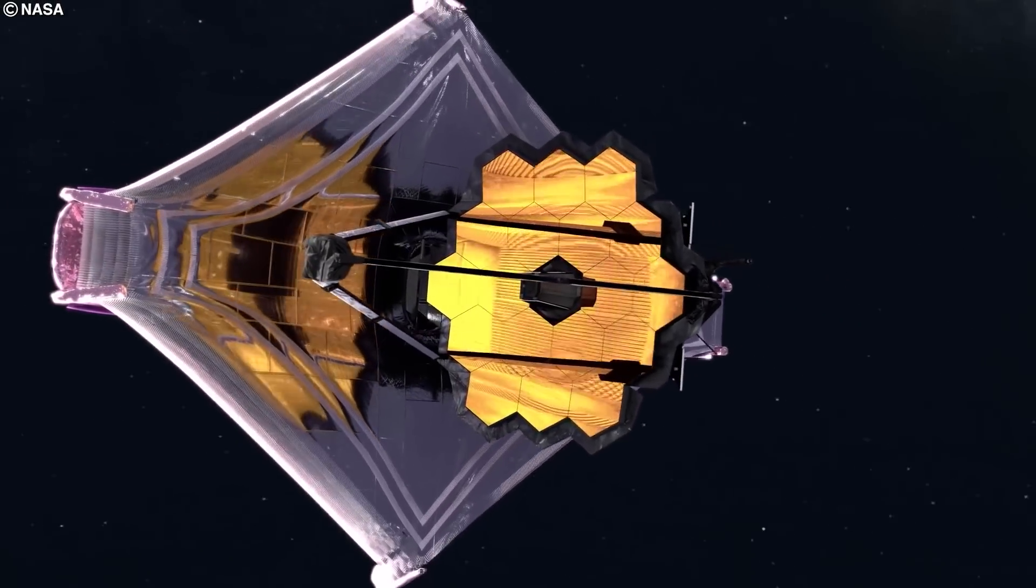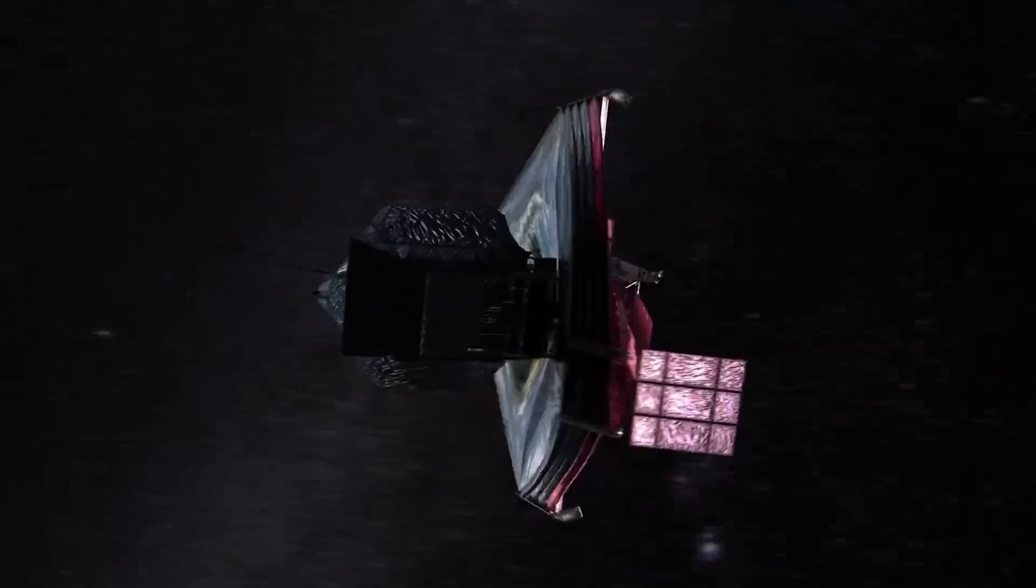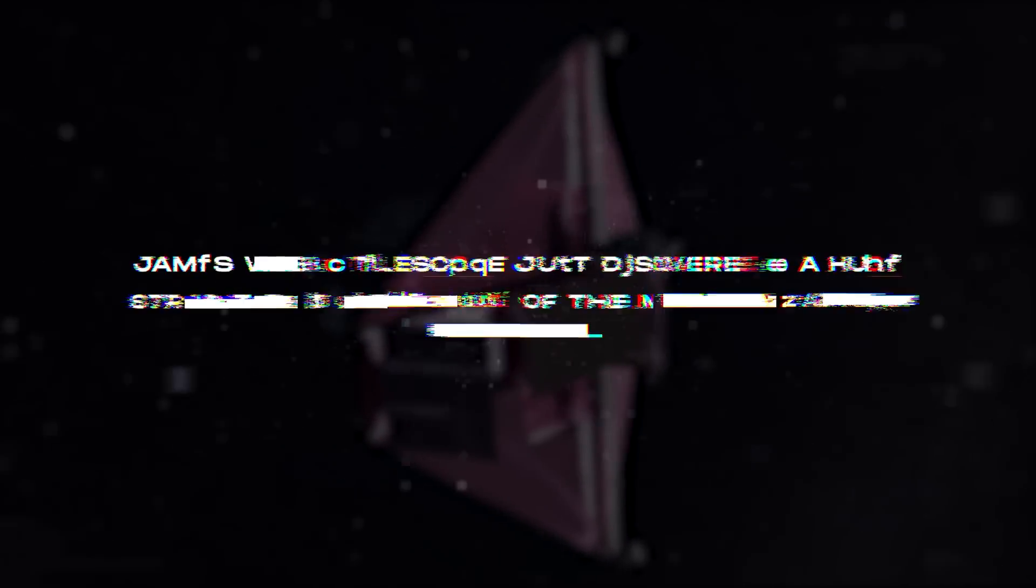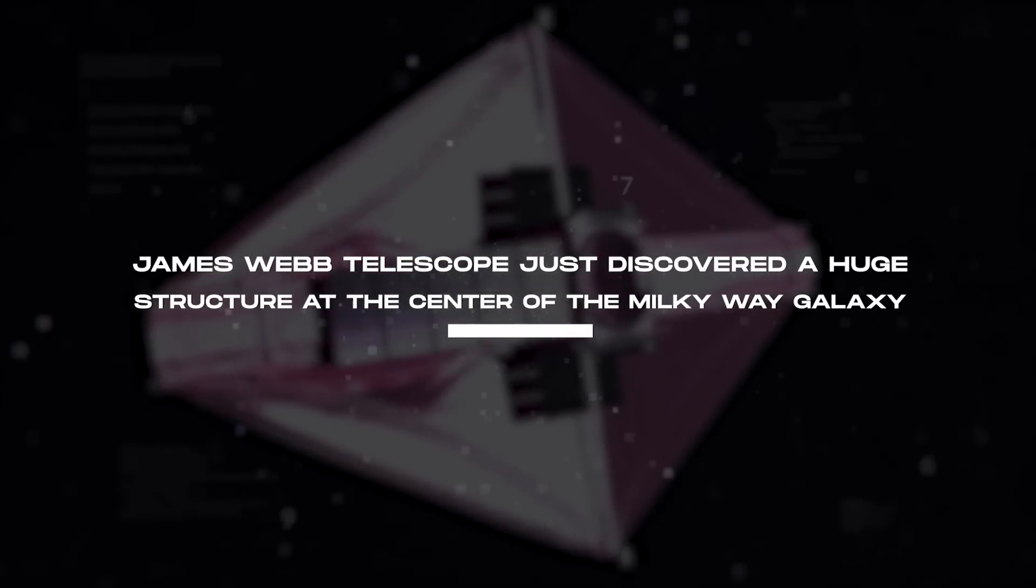But it appears that James Webb might even be capable of showing us some strange phenomenon right here in the middle of our very own galaxy. Scientists just revealed that the James Webb Telescope just discovered a huge structure at the center of the Milky Way galaxy.